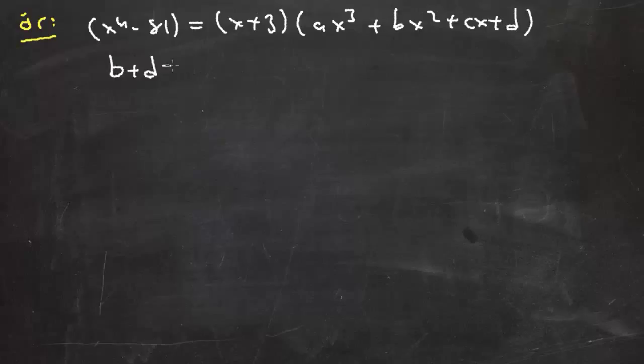İlk örneğimiz: x⁴ - 81 = (x + 3)(ax³ + bx² + cx + d) ifadesinde b + d'nin ne olduğu sorusu. Şimdi bu ifadeyi inceleyecek olursak şurada bir polinoma P(x) diyelim. Burada P(x) polinomunda b + d ne oluyor? P(x) polinomunun çift dereceli terimlerinin katsayıları toplamı oluyor.